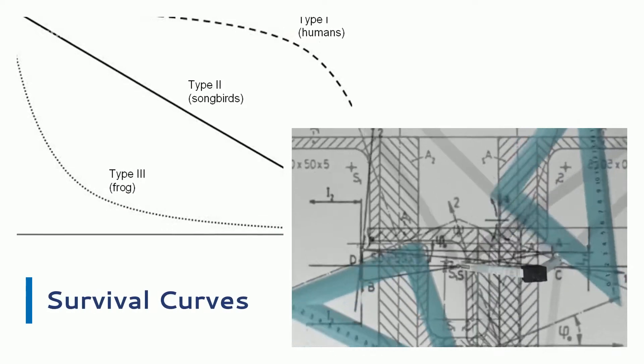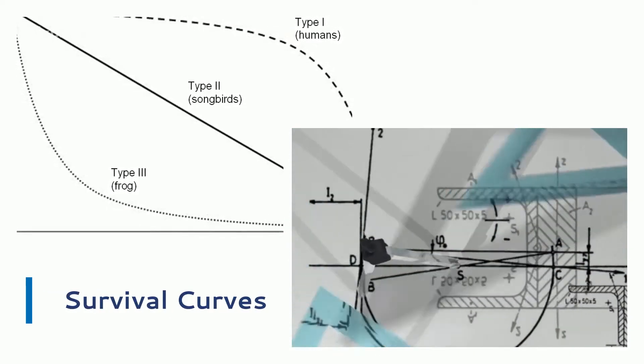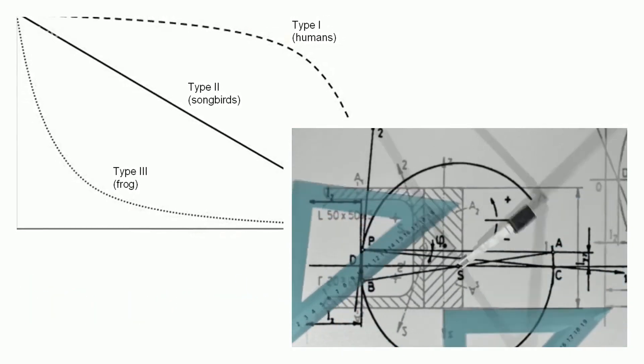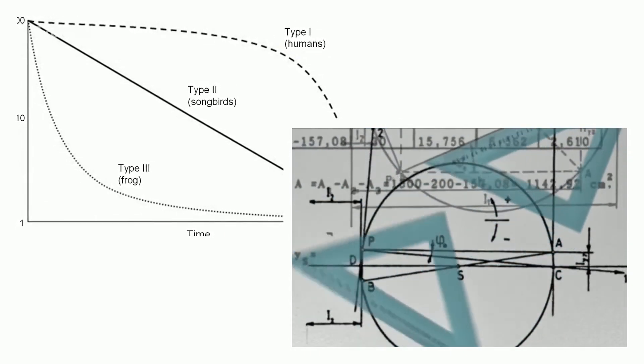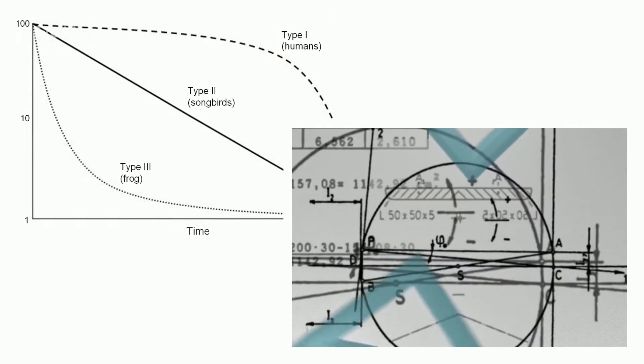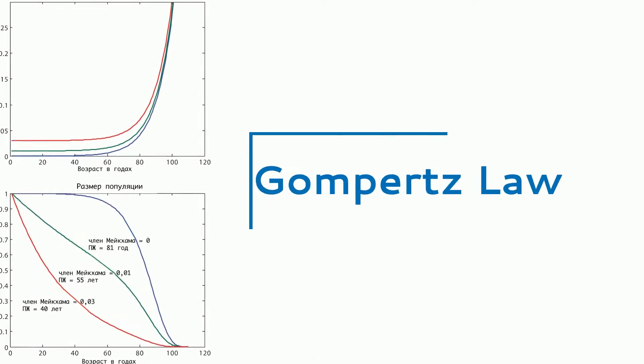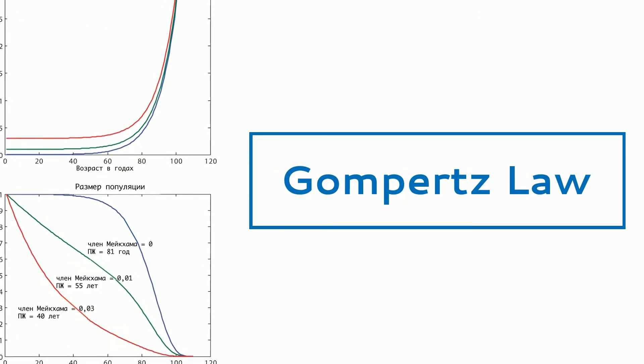The graphs are known as survival curves. There are several parametric mathematical rules which have been developed to describe the shape of the survival curve. One popularly used model is the Gompertz law, which describes the death curve as an exponential function of time.